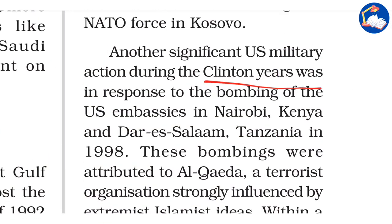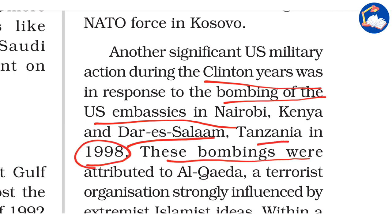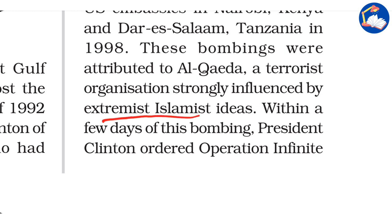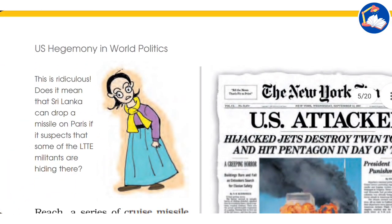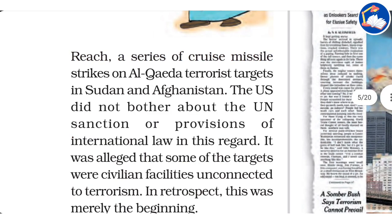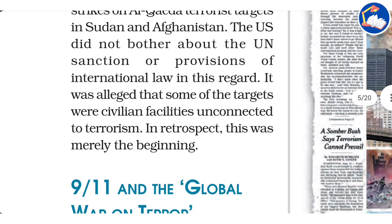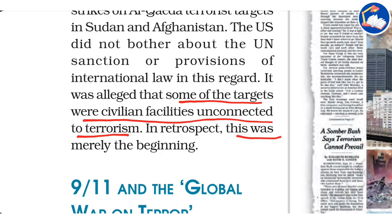Another significant US military action during the Clinton years was the response to the bombing of US embassies in Nairobi, Kenya, and Dar es Salaam, Tanzania in 1998. These bombings were attributed to al-Qaeda, a terrorist organization strongly influenced by Islamist extremism. Within a few days, President Clinton ordered Operation Infinite Reach — a series of cruise missile strikes on al-Qaeda targets in Sudan and Afghanistan. The US did not seek UN sanction. It was alleged that some of the targets were civilian facilities unconnected to terrorism. In retrospect, this was merely the beginning.